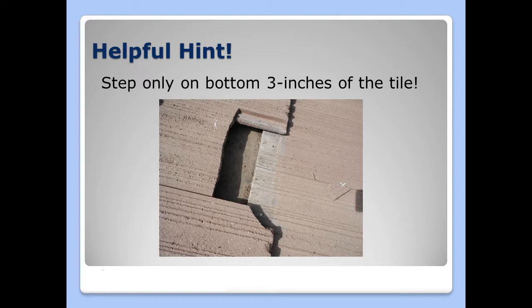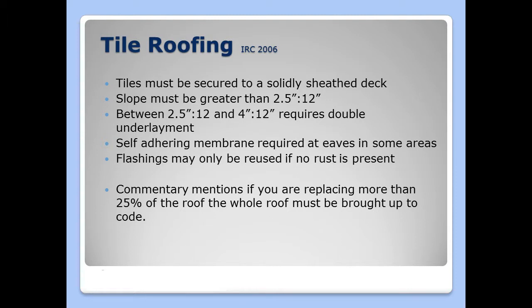The proper way to walk on this roof is remaining on that bottom section. As far as codes go, tiles must be secured to a solidly sheathed deck — this is more common in the United States because it's code. Slope must be greater than two and a half inches in 12 for a tile roof. Between two and a half and four inches in 12, you would require a double underlayment. Self-adhering membrane is required at the eaves, which in some areas is a local jurisdiction county or city code requirement.